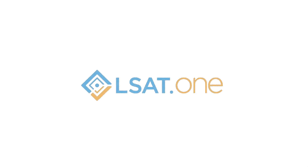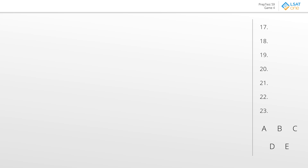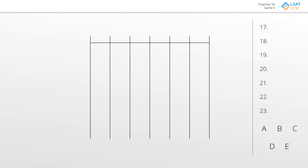For this game we have essentially a straight sequencing game. We'll set it up accordingly — we have six spaces to work with and six elements: L, M, N, T, V, W. Each one of these cities is just going to show up once in one of these six positions. Let's get into the rules.